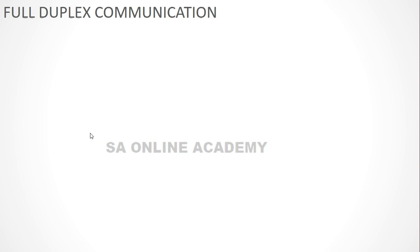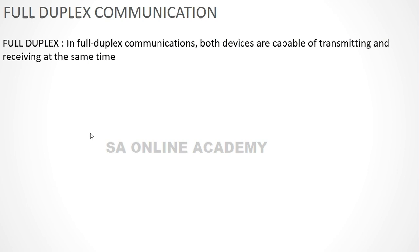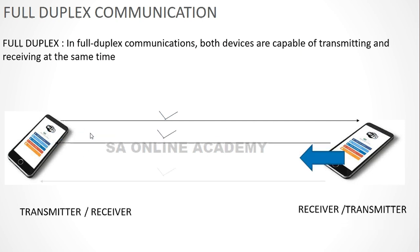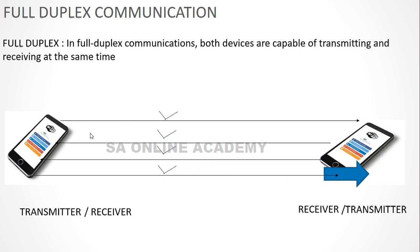The third type is full duplex communication. In this type, transmitting and receiving are both available on a device and can happen at the same time. 802.3-based communication standards are generally full duplex. A device acts as both transmitter and receiver simultaneously. To deploy a full duplex communication system, there are generally two separate channels — one for transmitting and another for receiving. This is the best way to deploy a full duplex system.